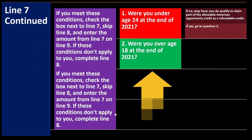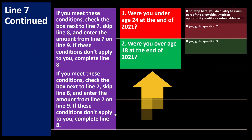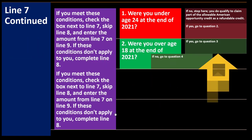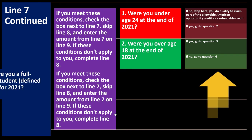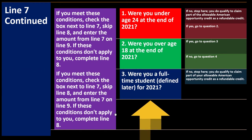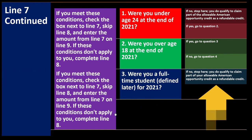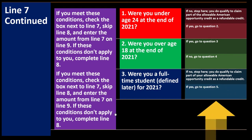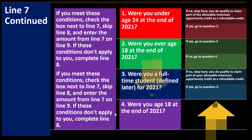Question 2 — were you age 18 at the end of 2021? If yes, go to question 3. If no, go to question 4. Question 3 — were you a full-time student for 2021? If no, stop here — you do not qualify to claim part of your allowable American Opportunity Credit as refundable. If yes, go to question 5.